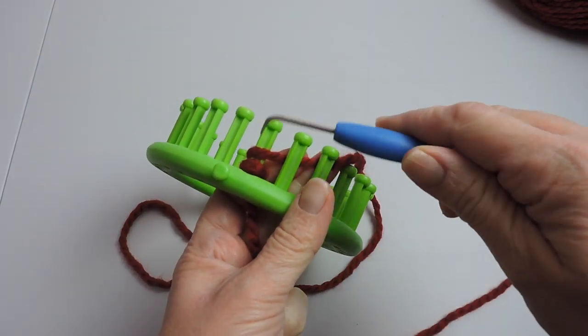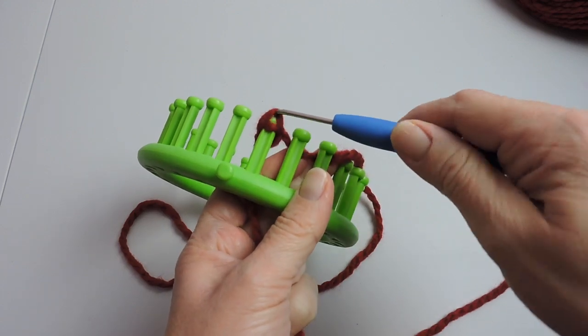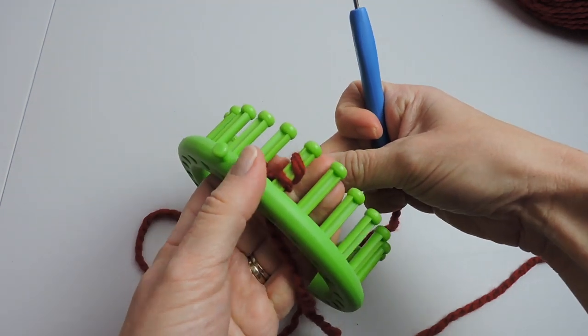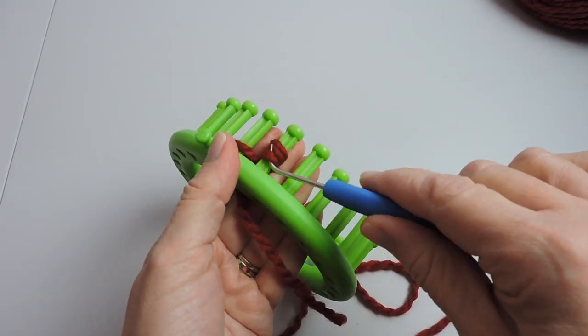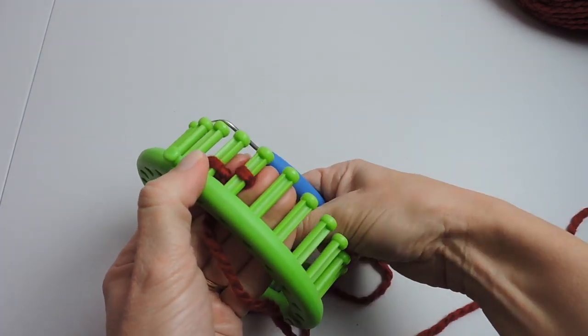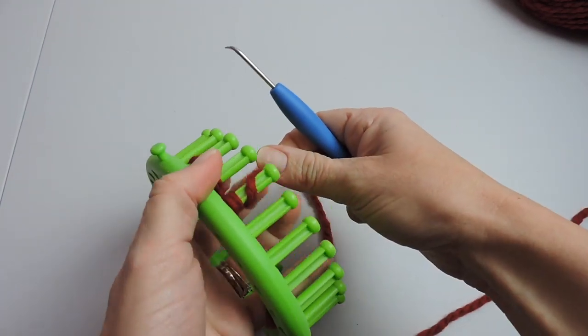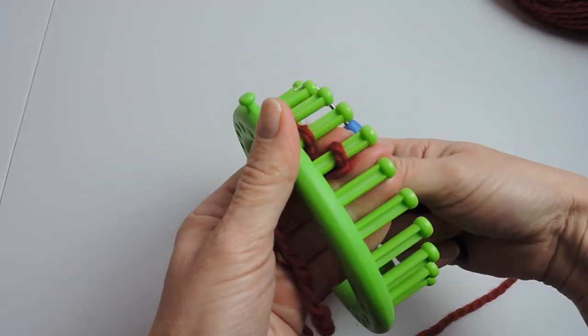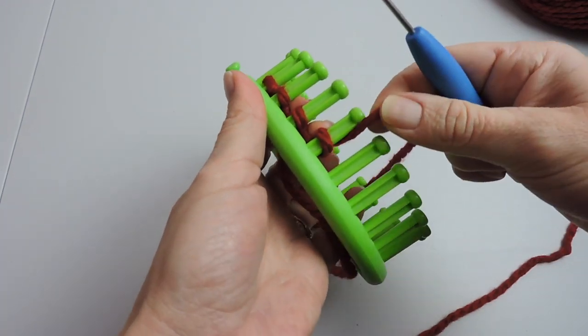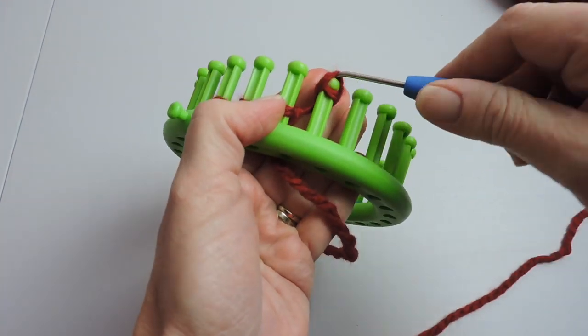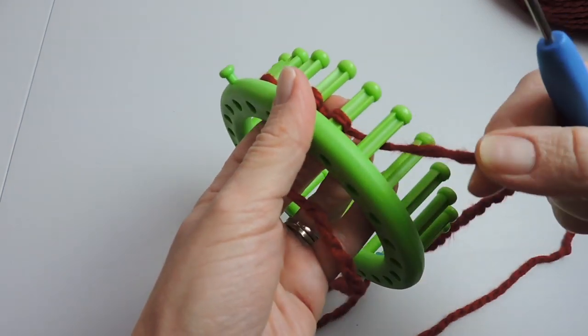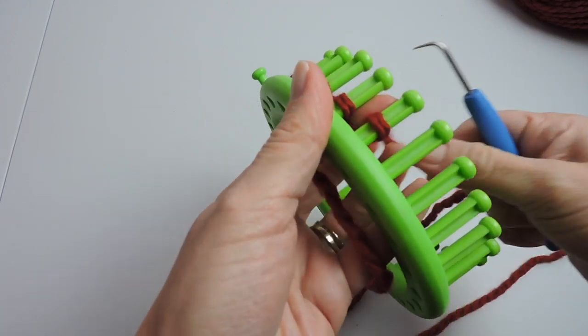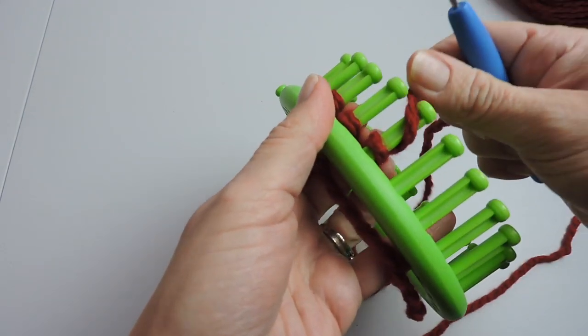So we're going to start with the first peg wrap it around and take the bottom over the top. Now we're going to do the second peg so wrap it around once and then wrap it around again on top of the first stitch and then take the bottom over the top. So again we're just going to do one peg at a time making a little e and then another one on top and then taking the bottom stitch over the top stitch and we're going to do this for the first 12 pegs. We're only going to be working with 12 pegs.